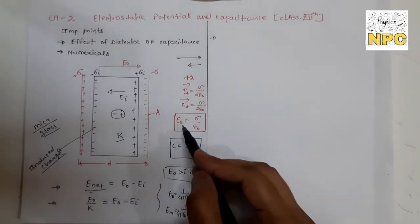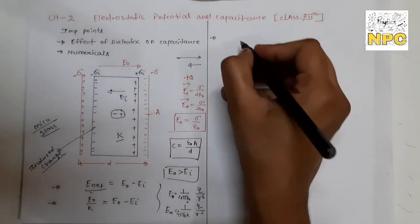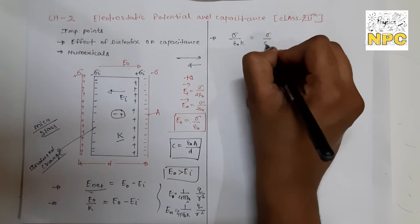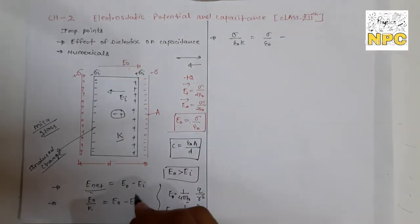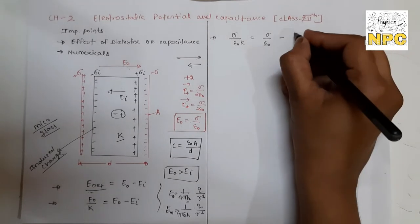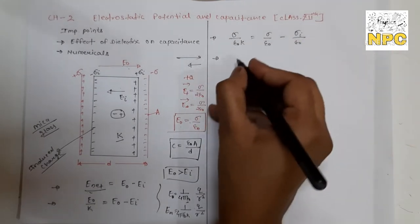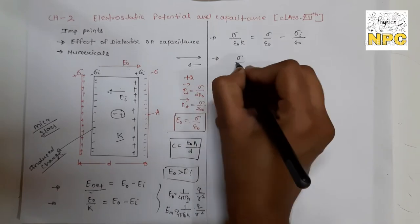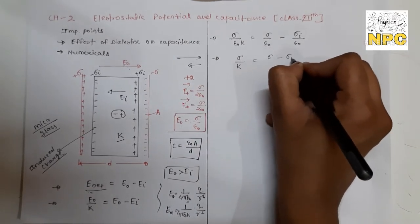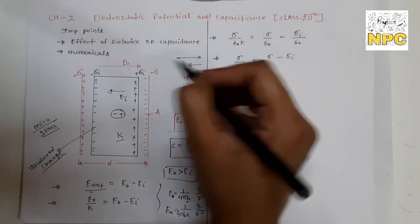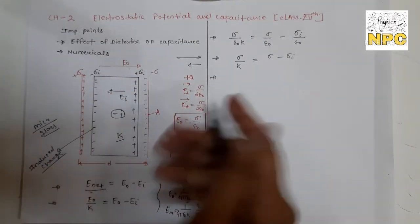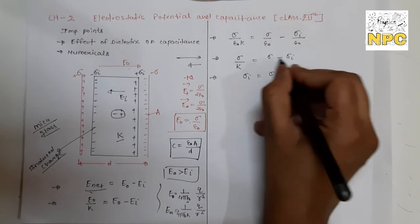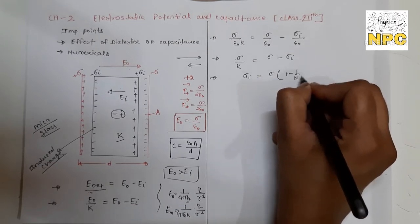Now putting the value: E₀ = σ/ε₀. So σ/(ε₀·K) = σ/ε₀ - σᵢ/ε₀. After ε₀ cancels out, we get σ/K = σ - σᵢ. From this we can find the surface charge density on the dielectric. Rearranging: σᵢ = σ - σ/K = σ(1 - 1/K). This means the induced charges on the dielectric are always less than the total charges on the parallel plates.